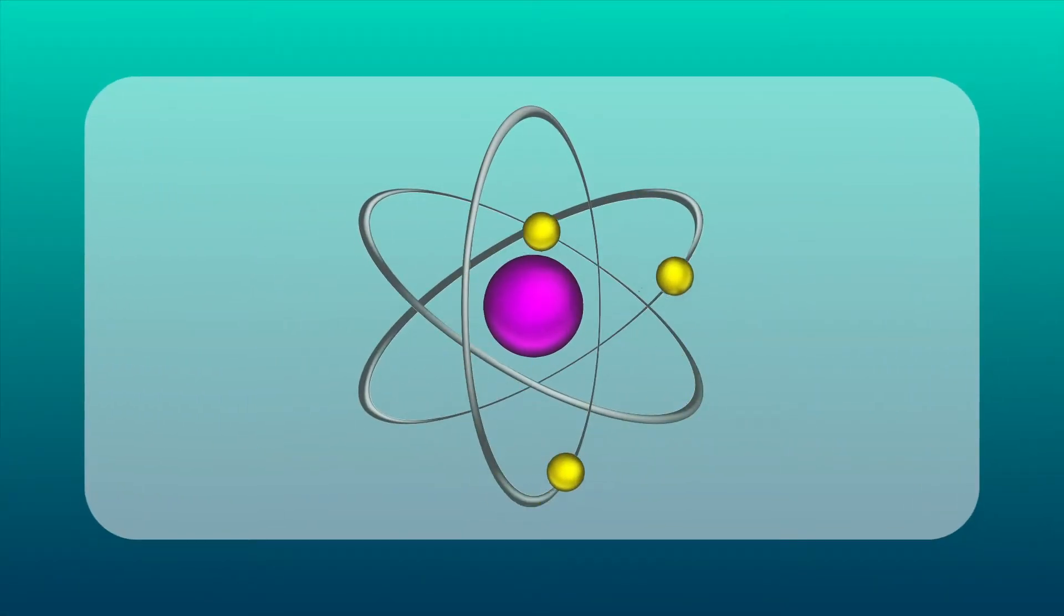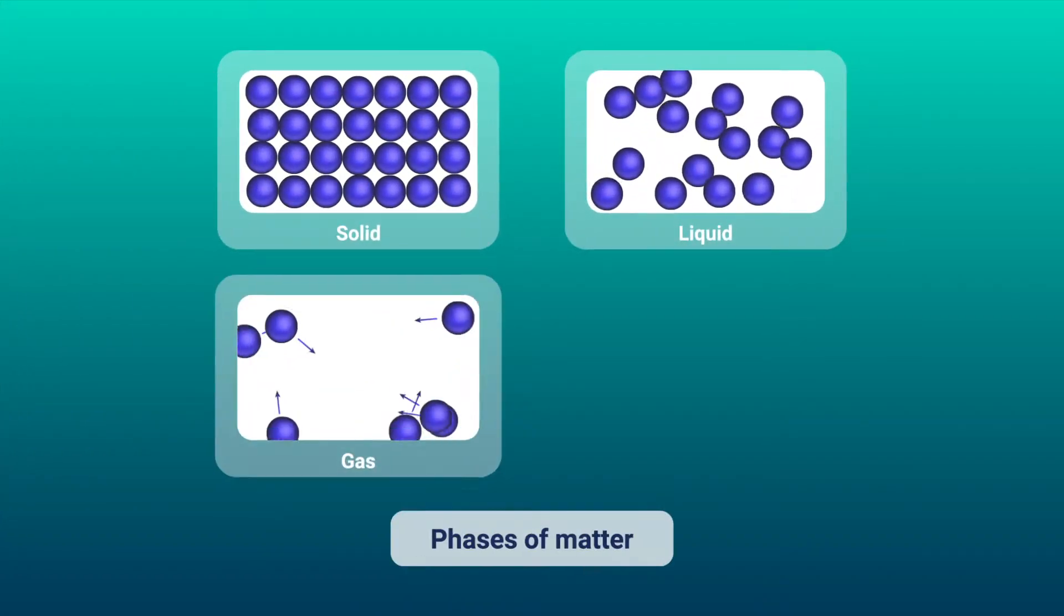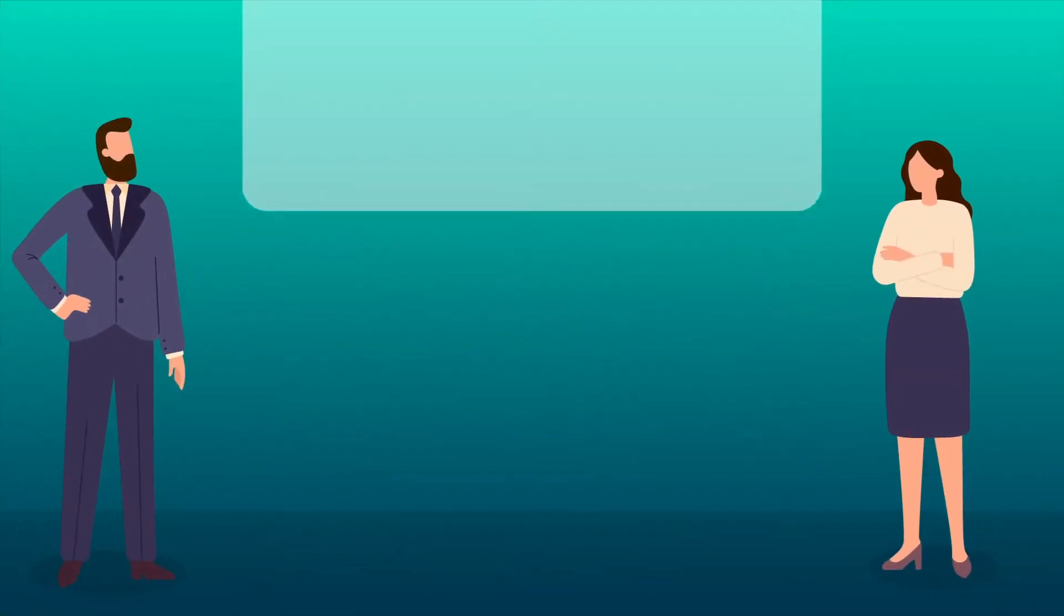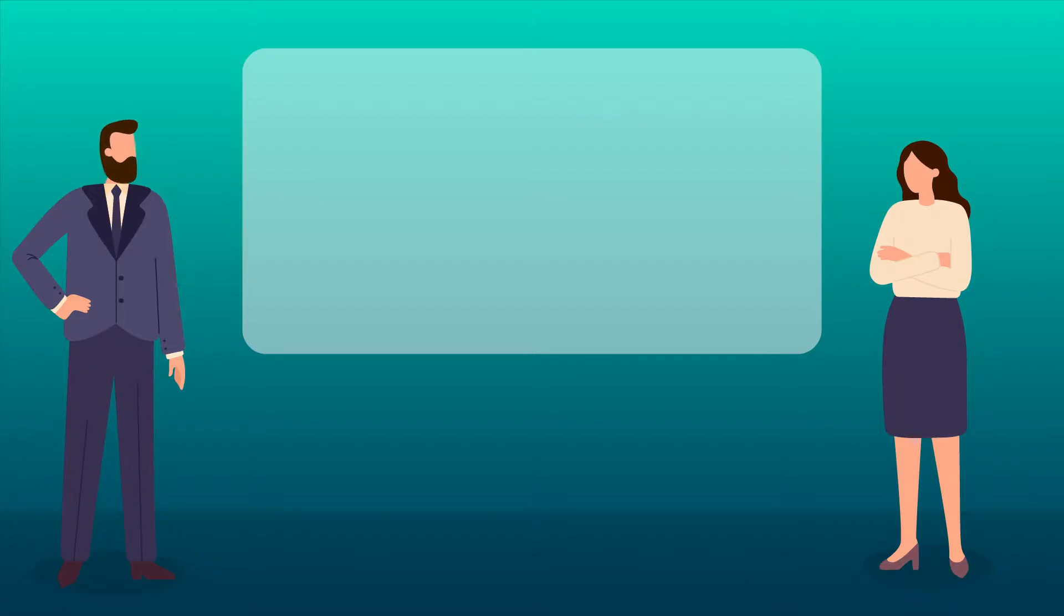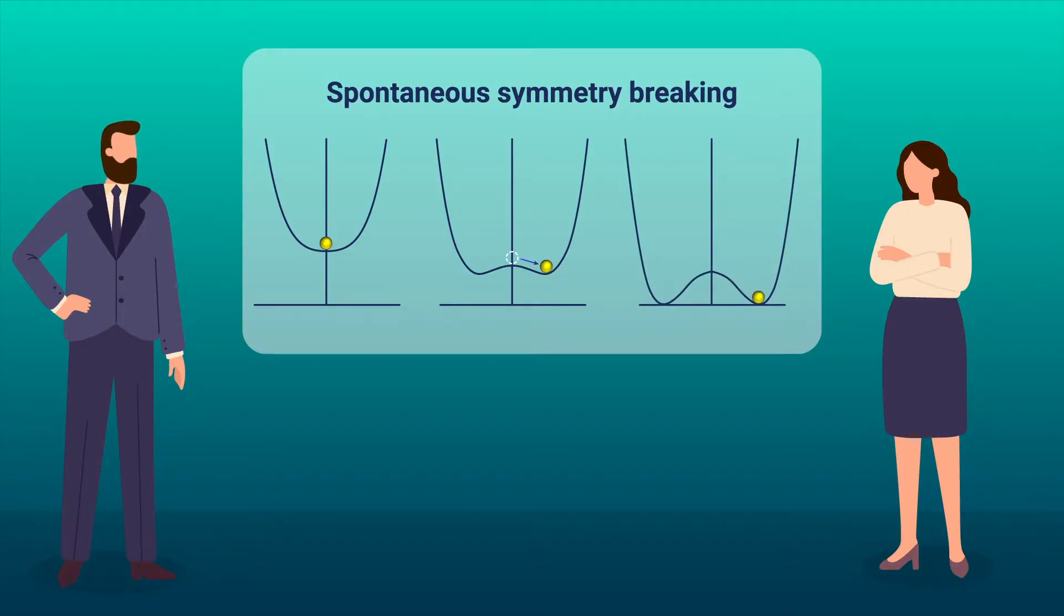One of the fundamental problems in theoretical physics is the classification of phases of matter. A successful theory on this front was pioneered by the physicist Landau, who proposed a theory of phase transition based on spontaneous symmetry breaking.